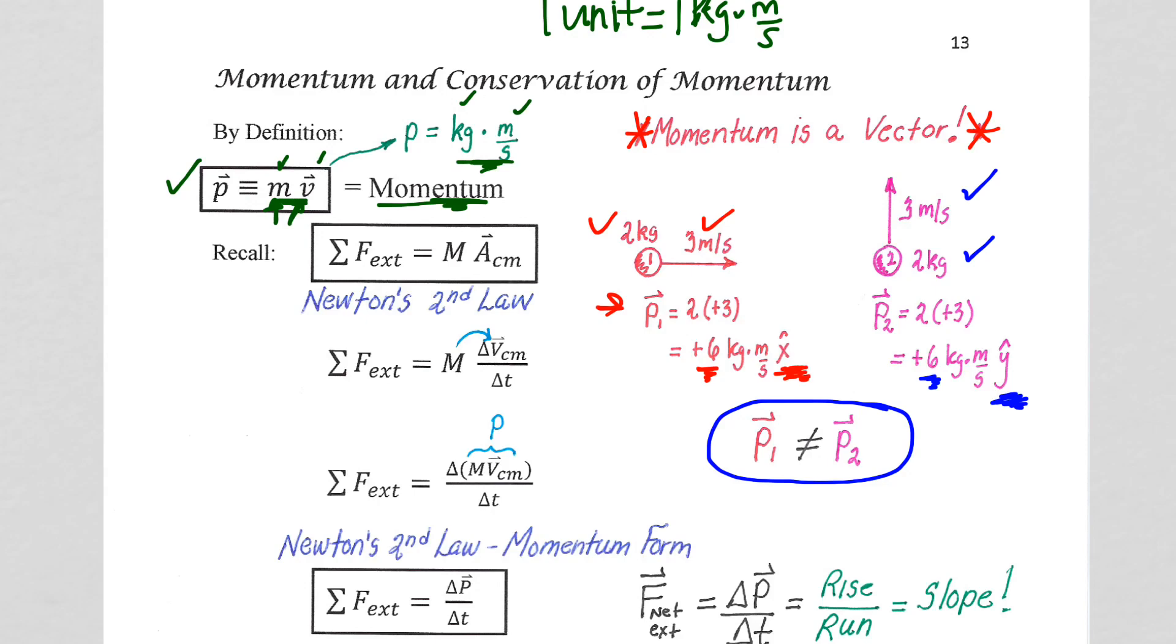To make the six momentum units to the right be exactly the same as the six momentum units up, what we would need to do is totally stop the particle from moving to the right and make it start moving up at three meters per second. Now, I can say the momentums are the same. Momentum is a vector quantity.